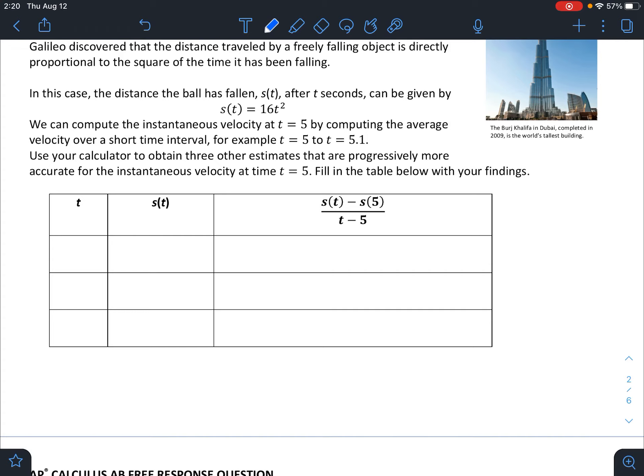In this case, the distance the ball has fallen, which we're going to call S(t), after t seconds, can be given by the formula S(t) = 16t². We can compute, or at least estimate pretty well, the instantaneous velocity at t = 5 by computing the average velocity over a short time interval, for example t = 5 to t = 5.1, or even smaller intervals than that.